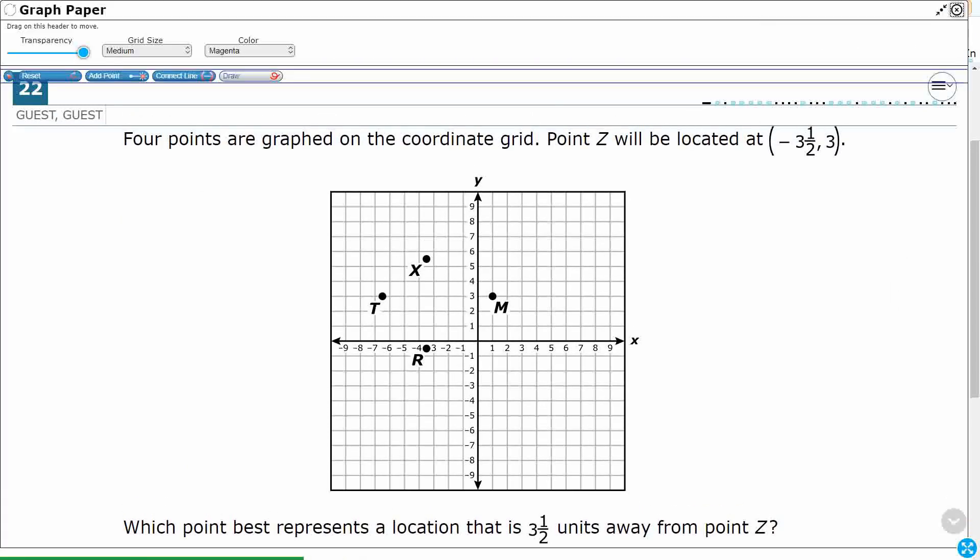Alright, so let's first put point Z on the graph. So point Z, we've got our x and our y coordinates here. So our point Z is going to be x of negative 3.5.